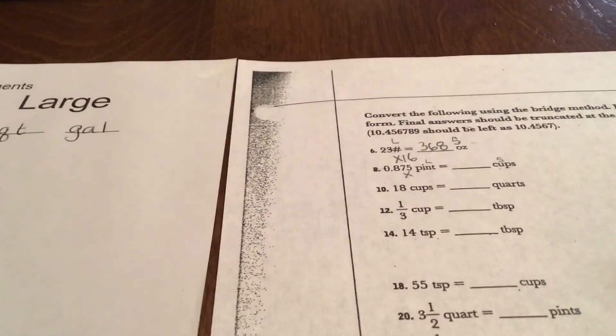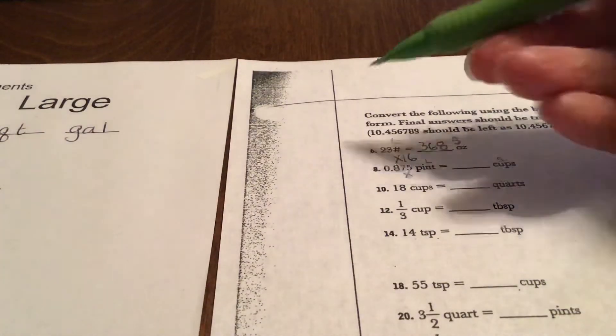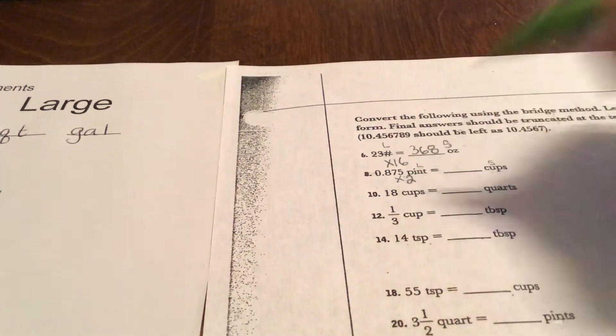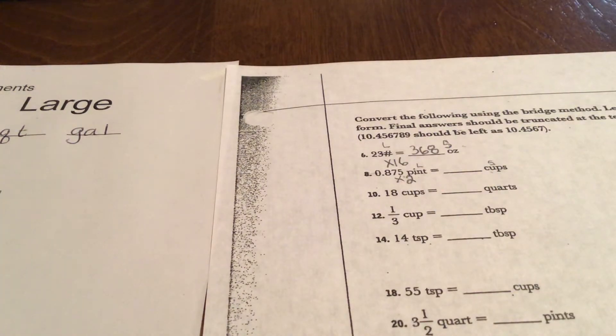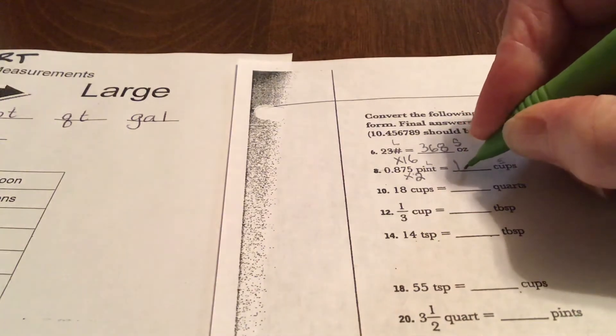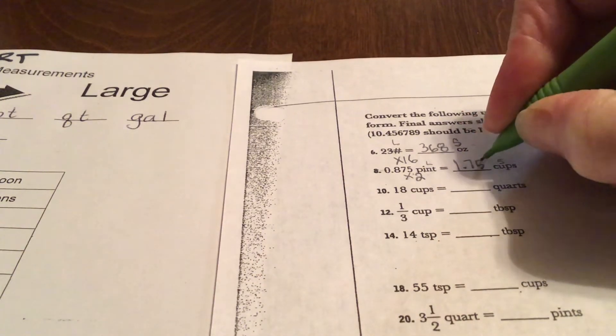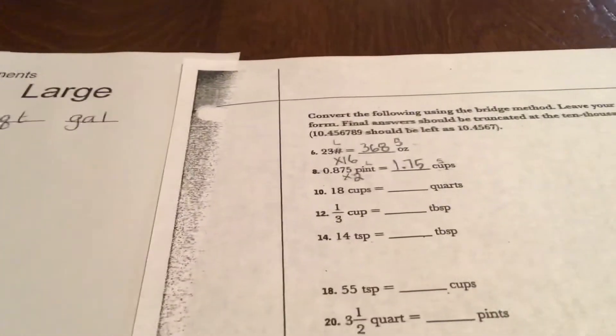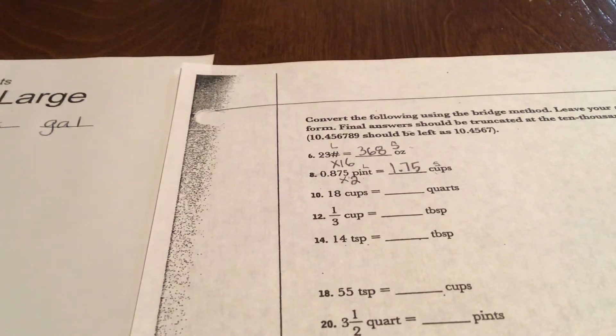So we would multiply 0.875 times 2, which is 1.75 cups. All right, let's do one more because I think this one is going to make us do the different procedure, different movement.